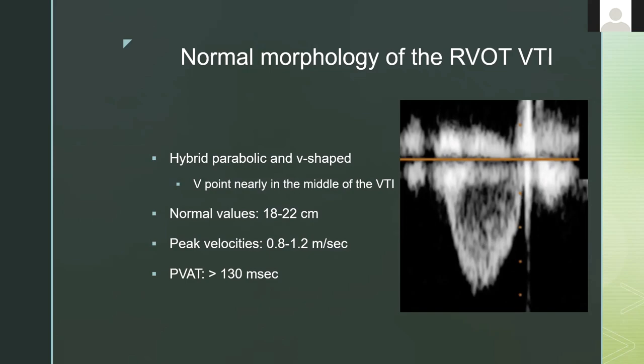If you see peak velocities higher than one meter per second, you'll be thinking there's maybe some congenital right ventricular outflow tract obstruction or pulmonic valve problem. It's very rare for people to have an acquired stenotic lesion.